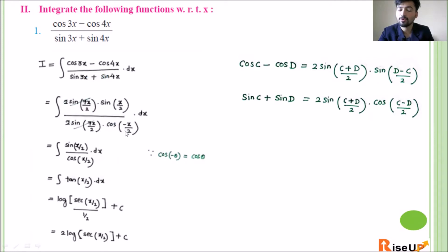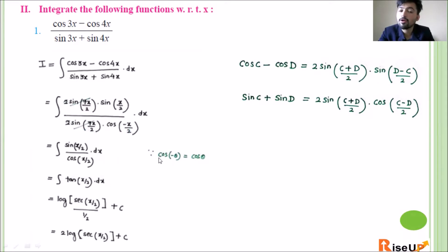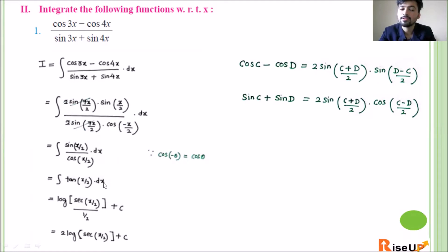Now the 2 and sin(7x/2) cancel from numerator and denominator. We're left with sin(x/2) in the numerator and cos(-x/2) in the denominator. Since cos(-θ) equals cos θ, cos(-x/2) becomes cos(x/2). So sin upon cos gives tan, meaning the integrand simplifies to tan(x/2) with respect to x.